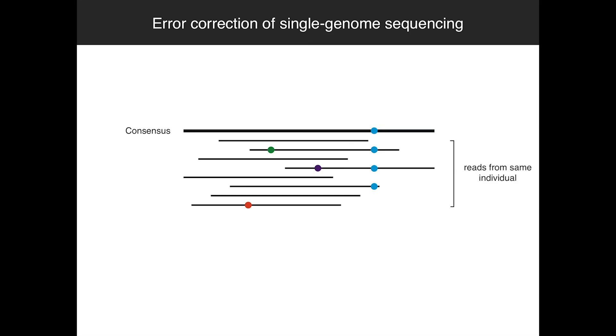For any of you who've ever done population sequencing or next generation sequencing, you know that even though they can produce massive quantities of data, they do so with extremely high error rates. For single genome sequencing, this isn't a big deal because all of the reads that come from your sequencing data come from the same individual. So anytime you have an error, it's very unlikely that you'll see it multiple times in your data set, and you can just collapse all the reads into a consensus.